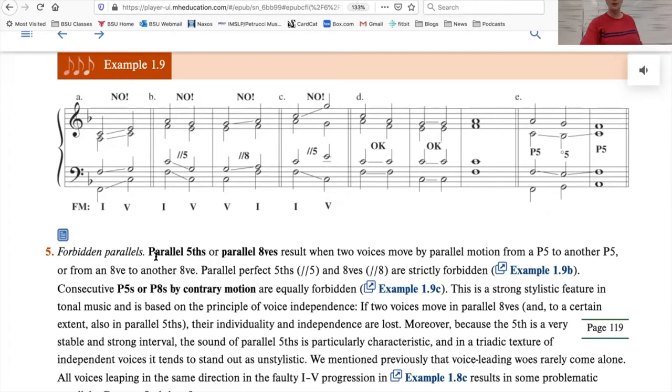But you always want to be on the lookout for these core errors in part writing. Probably the most serious error is to have parallel perfect fifths or parallel perfect octaves. Okay, here's the definition in your book. Parallel fifths or parallel octaves result when two voices move by parallel motion from a perfect fifth to another perfect fifth. It has to be in the same two voices, and it has to be going from a perfect fifth to another perfect fifth.